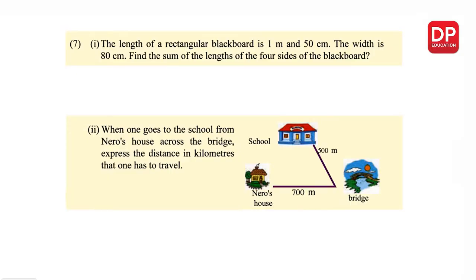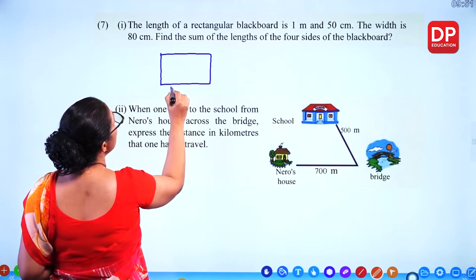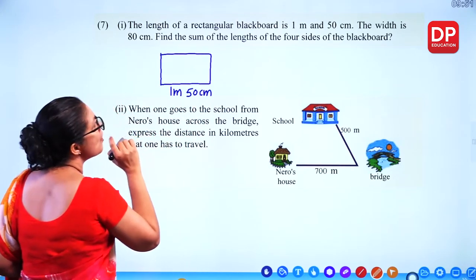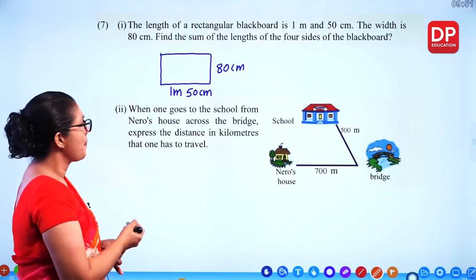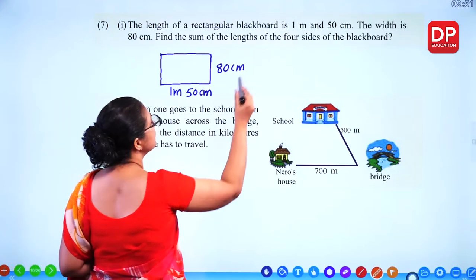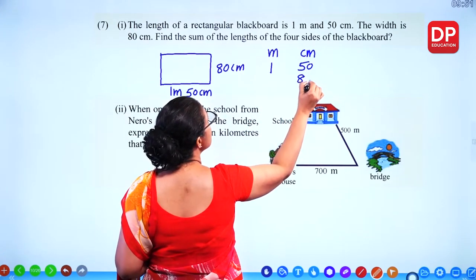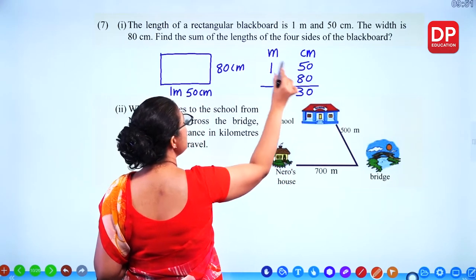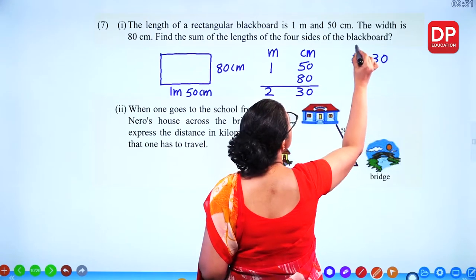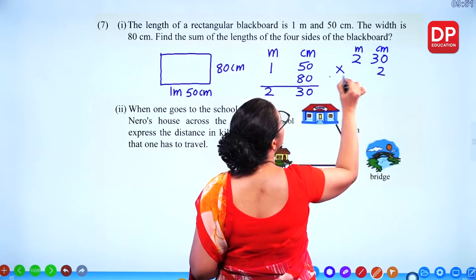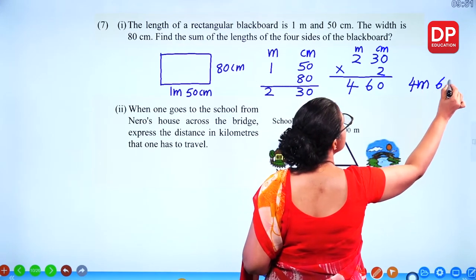Question number 7: the length of a rectangular blackboard is 1 metre 50 centimetres, and the width is 80 centimetres. Find the sum of the lengths of the four sides — that is the perimeter. Add length and width: 1 m 50 cm plus 0 m 80 cm = 2 metres 30 centimetres. Multiply by 2: 2×30=60 cm, 2×2=4. The perimeter is 4 metres 60 centimetres.